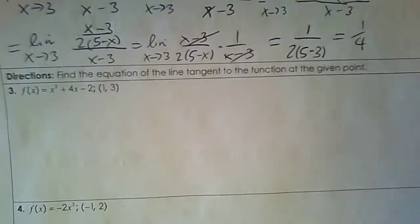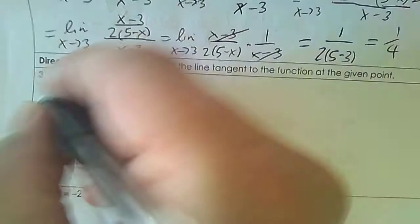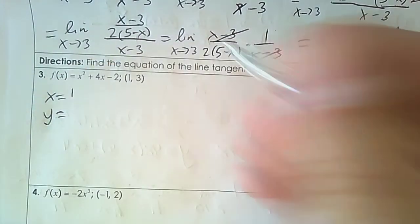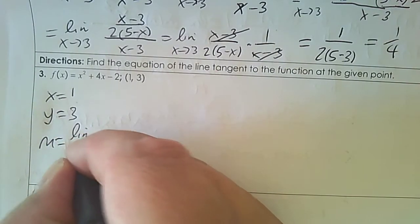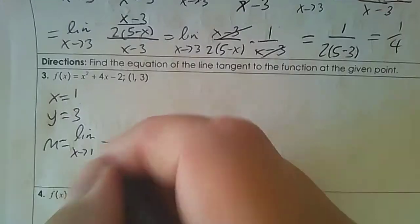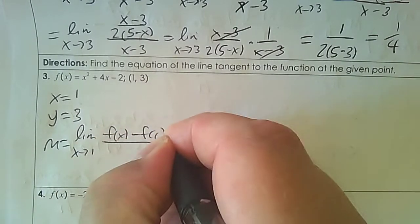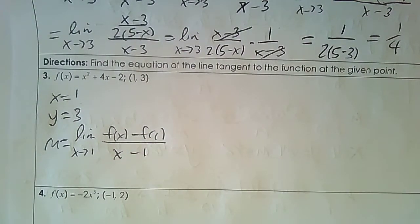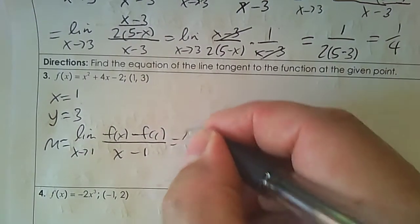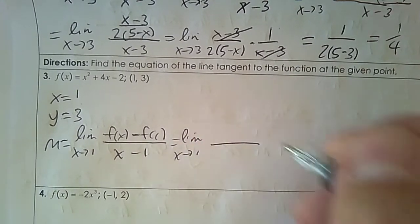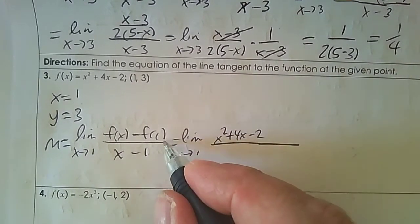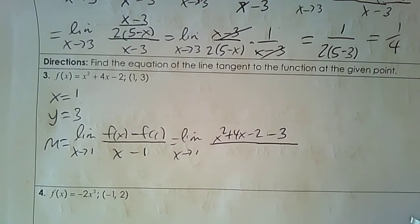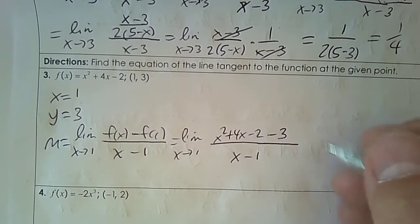Number 3: find the equation of the tangent line. We already know x equals 1 and y is 3, but we need to find the slope. Since I know the x-coordinate, we use the limit as x approaches 1: f(x) subtract f(1) over x subtract 1. Using limit notation, f(x) is x² plus 4x subtract 2, and f(1) is 3, so subtract 3. The denominator stays x subtract 1.